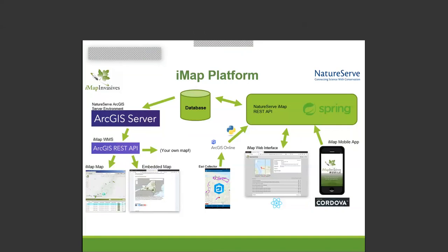The data accessed through the web map services is read directly from the IMAP database. As data comes in from a variety of sources, the advantage of using IMAP web map services is that you're reading live data — there's no sync process. Each time someone loads a map pulling from the IMAP web map services, it pulls directly from the database, so you're always seeing the current data.